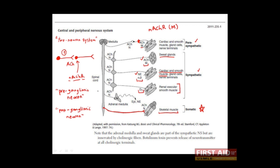Finally, we'll discuss the special case of the adrenal medulla. We have the first neuron of the sympathetic division extending its axon into the adrenal medulla, where it releases acetylcholine. The cells of the adrenal medulla, known as chromaffin cells, are actually derived from the neural crest — they are essentially modified second neurons of the sympathetic division. When stimulated by the first neuron, they are induced to release epinephrine and norepinephrine directly into the blood, resulting in the systemic responses associated with a fight or flight response.